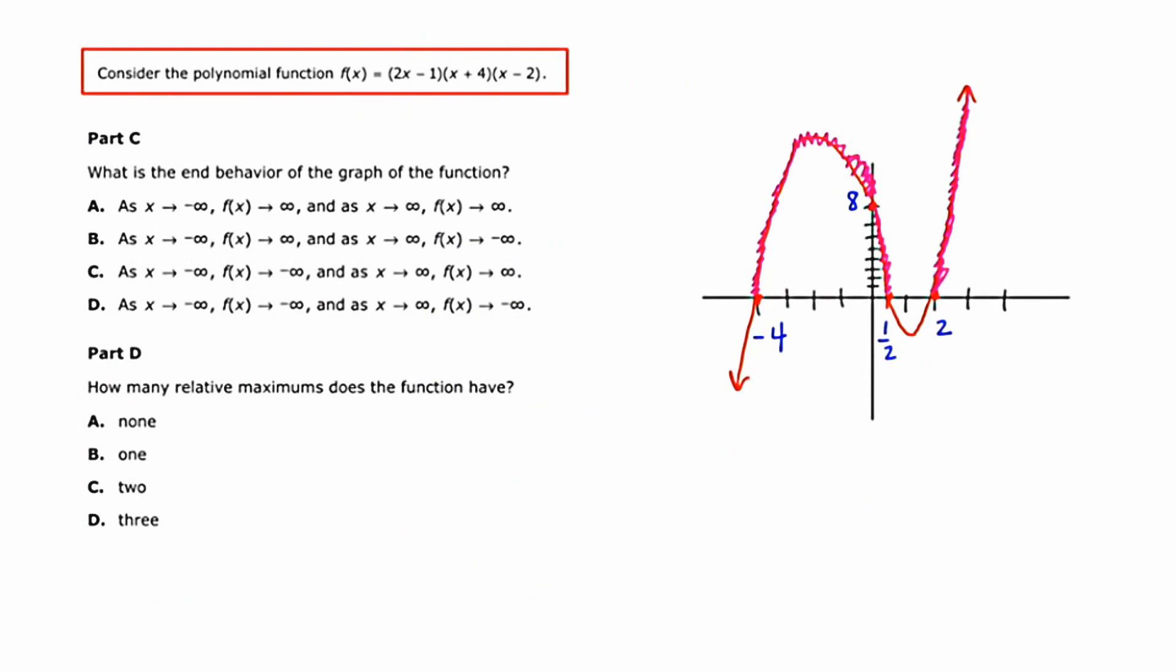Okay, on this slide we talk about parts C and D of the same polynomial function. In Part C, it says what is the end behavior of the graph of the function? Now this idea of end behavior is something that I discussed on the other slide, but here it's presented in a slightly strange notation if you're not used to it. Let's consider the four options.